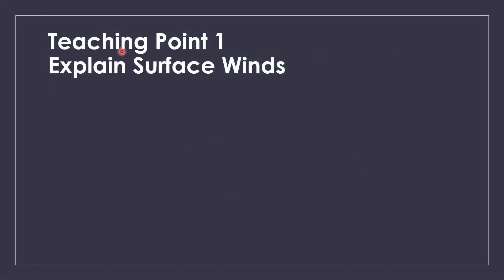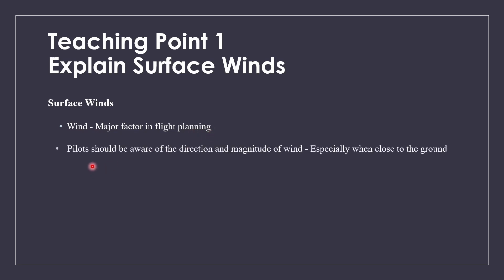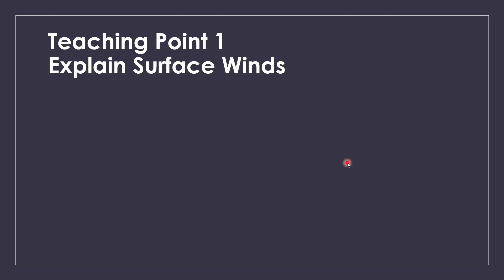Teaching point one will be talking about surface winds. As you all know, winds play a major factor in flight planning. Pilots should be aware of the direction and magnitude of the wind, especially when they're close to the ground. Whenever they're close to the ground, the first type of wind they will be affected by is surface friction, which plays an important role when it comes to takeoffs and landings.